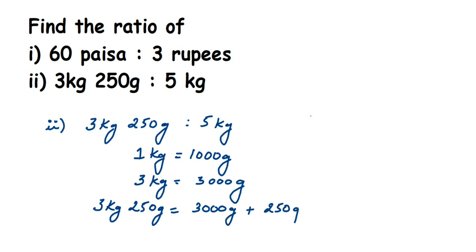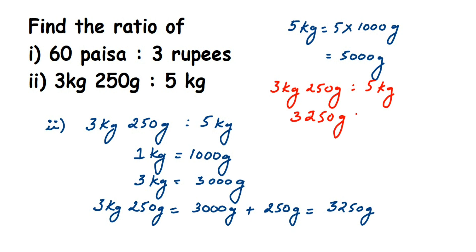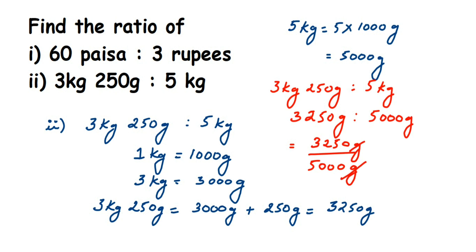Similarly, I'm going to convert 5 kg: 5 kg equals 5 into 1000 grams, which equals 5000 grams. Now we find the ratio. In place of 3 kg 250 grams I write 3250 grams, and in place of 5 kg I write 5000 grams. Converting the ratio to fraction form: 3250 grams divided by 5000 grams — units cancel. I can cancel a zero from each side, then cancel further using the 5 times table.